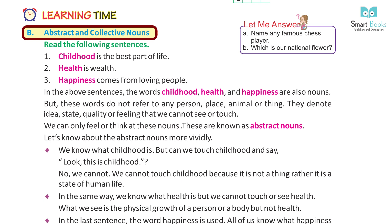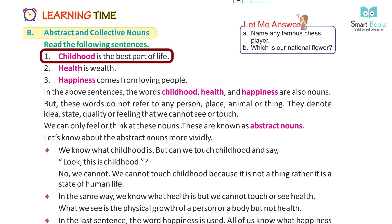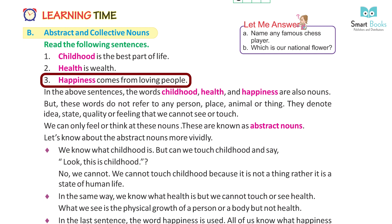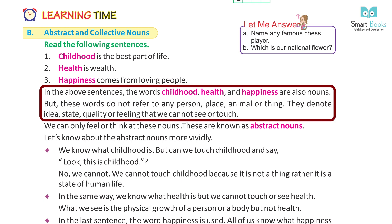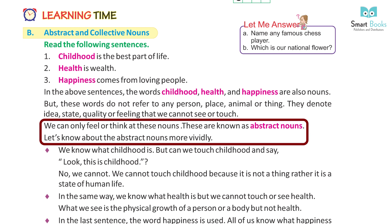Learning time B: Abstract and Collective Nouns. Read the following sentences: 1) Childhood is the best part of life. 2) Health is wealth. 3) Happiness comes from loving people. In the above sentences, the words childhood, health and happiness are also nouns. But these words do not refer to any person, place, animal or thing — they denote an idea, state, quality or feeling that we cannot see or touch. We can only feel or think about these nouns.